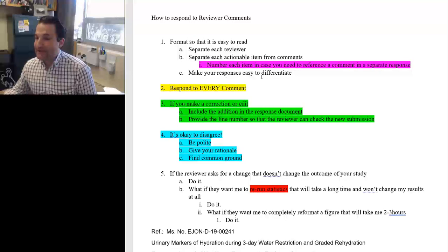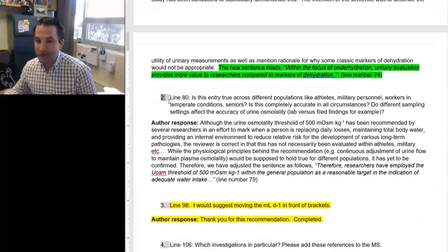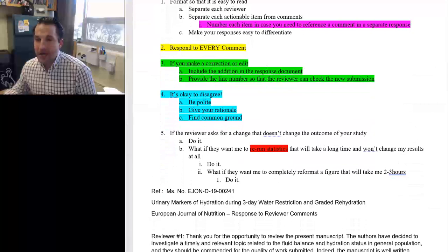And make your responses easy to differentiate. So, let's look at our first one right here. Here's their first comment. And then you can see, in bold, after each of the numbered comments, I have author response. Here's comment number two. Author response. That lets them know exactly where that's going to be. So, these little formatting tricks can actually make a big difference for your reviewer.